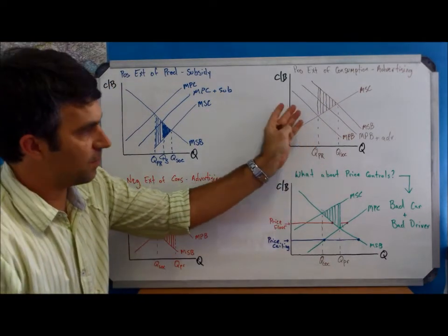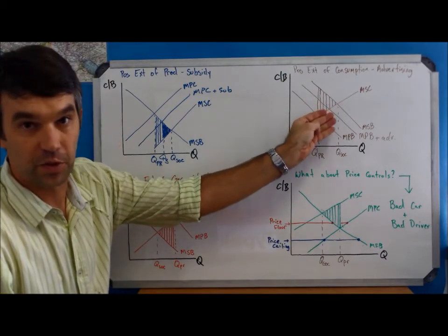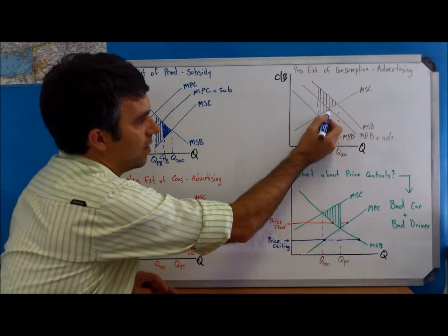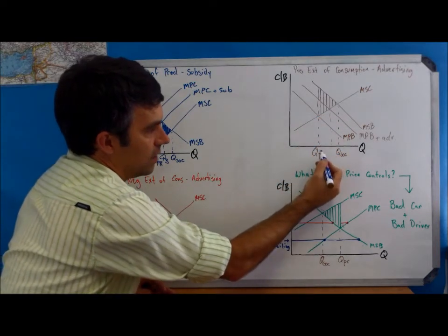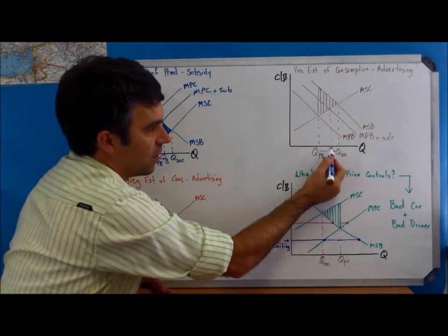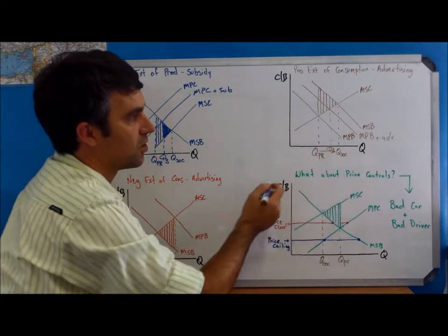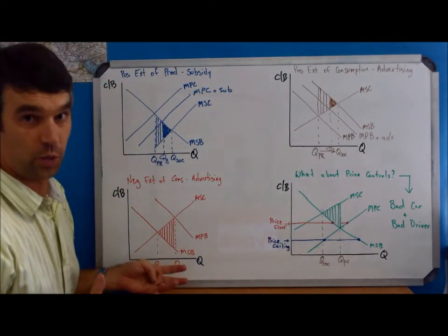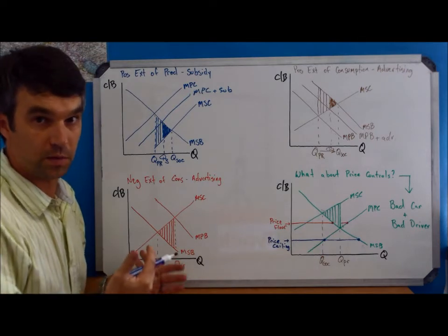So after the advertising, we've seen that marginal private benefit has moved to the right. Each person sees a greater benefit for the product. The quantity is going to move to the right. That is, it's going to move closer to QSocial. The amount of the potential welfare gain will be reduced.